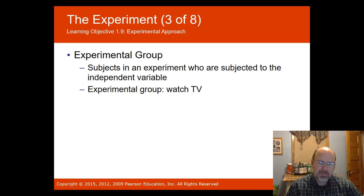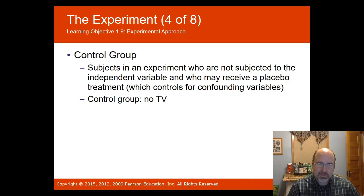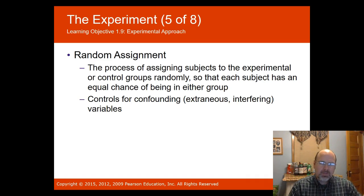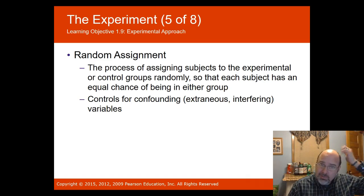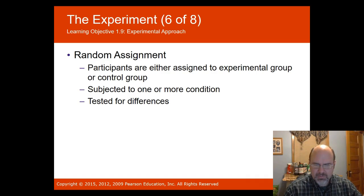The experimental group is subjected to the independent variable — for example, watching violent TV. The control group is not subjected to the independent variable, or may receive a placebo treatment such as a sugar pill, which controls for confounding variables. Random assignment is the process of assigning subjects to the experimental or control groups randomly, which controls for confounding or extraneous variables — those that interfere with each other and their possible effects on the variable of interest.